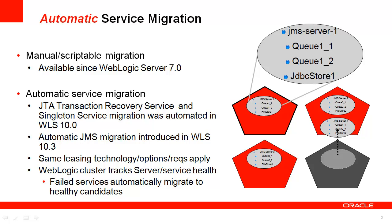Automatic service migration allows you to identify candidate managed servers for pinned services and set a policy for when a server should be migrated. There are two policies available: exactly-once and failure recovery. Choosing exactly-once will guarantee that if at least one managed server in the cluster is running, then the service will be running. However, if your cluster has five migratable targets with an exactly-once migration policy and you choose to only start one of the managed servers, then all five of the migratable targets will be running on that one server.